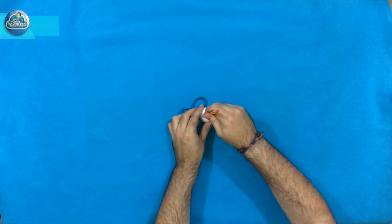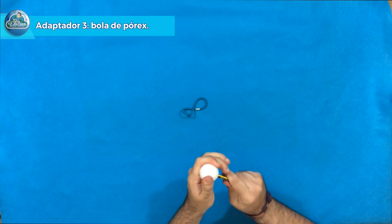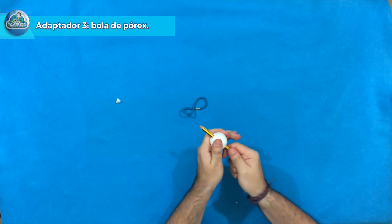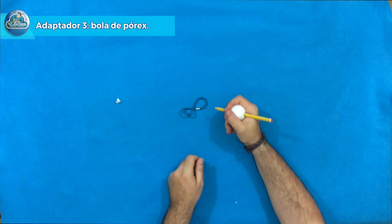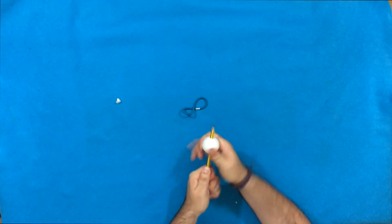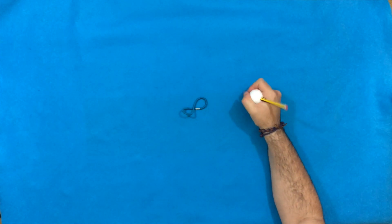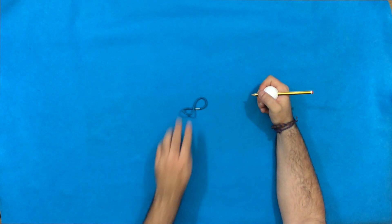Otro adaptador es insertar el lápiz dentro de la bola de pórex para lo mismo, para trabajar el agarre del lápiz y sobre todo entrenar lo que viene siendo la parte radial, es decir, la parte que aporta control dinámico y precisión en el trazo. Veis que me sirve para crear ese hueco vacío que se crea dentro de la pinza trípode.